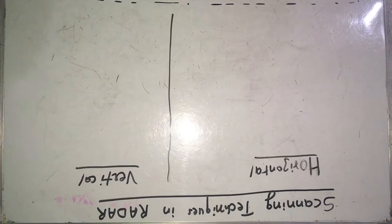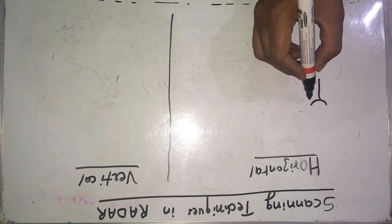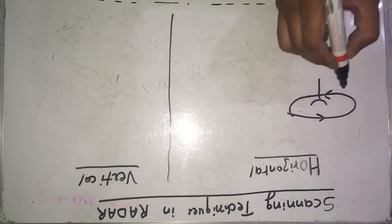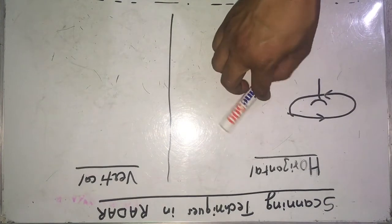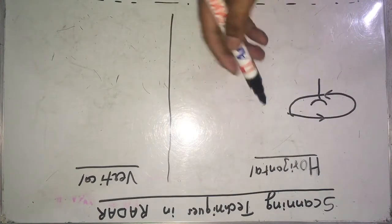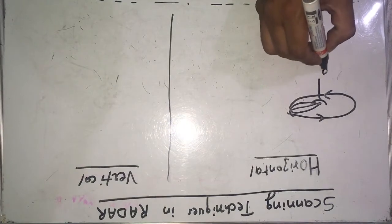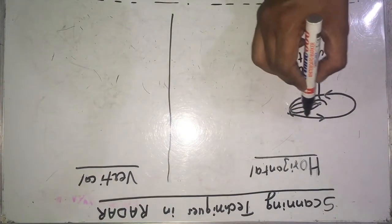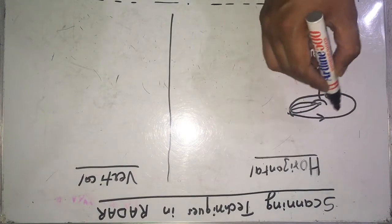In horizontal scanning, the antenna is rotated in azimuth around the horizon or in a sector. For example, in horizontal scanning the rotation of the antenna will be in the horizontal direction only. So if this is the antenna, it will rotate like this. As shown in this figure, this is the lobe of the radar antenna.